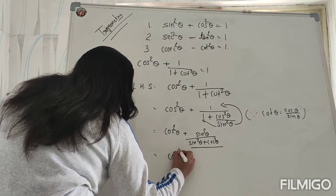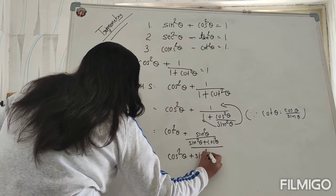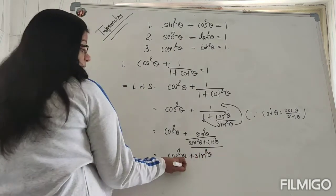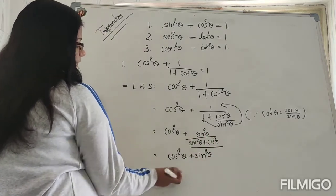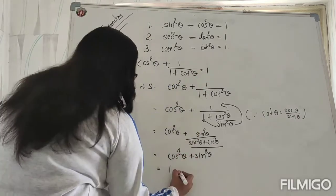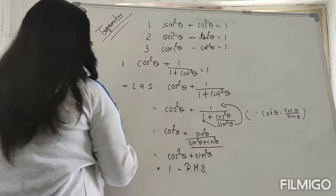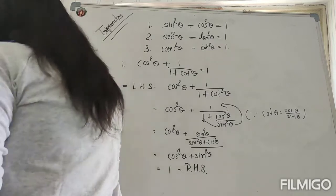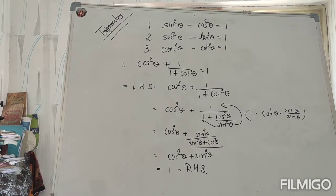So sin²θ + cos²θ = 1, so our denominator is 1 now, no need to write it. And in the numerator also we have got the same thing: cos²θ + sin²θ, that is 1, and that is our RHS. That is a level 1 question. Slowly we will start with level 2 and then level 3 questions.